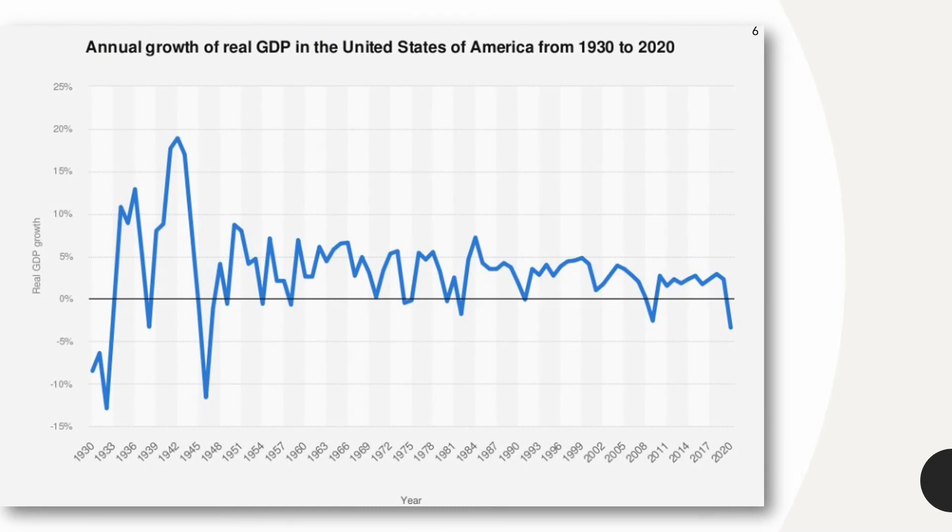For example, on average, real GDP in the United States grew at a rate of 3% per year from 1960 to 2007.